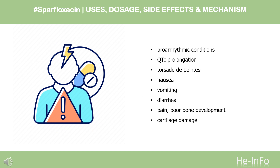Side effects of sparfloxacin on the digestive system: sparfloxacin causes digestive disorders such as nausea, vomiting, diarrhea. Sparfloxacin side effects on the bone and joint system: sparfloxacin causes pain and poor bone development, especially in the developing age, because sparfloxacin is metabolized in the conjugate cartilage, leading to cartilage damage.